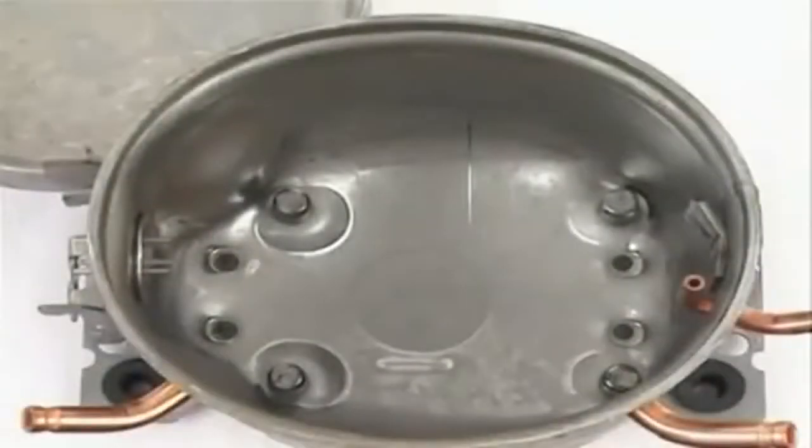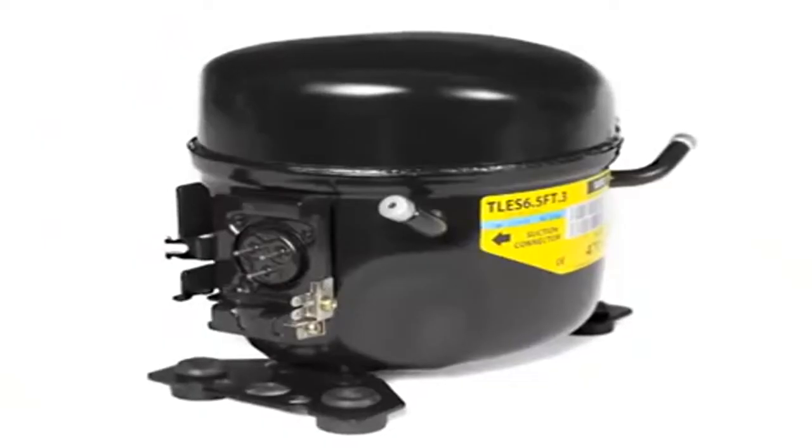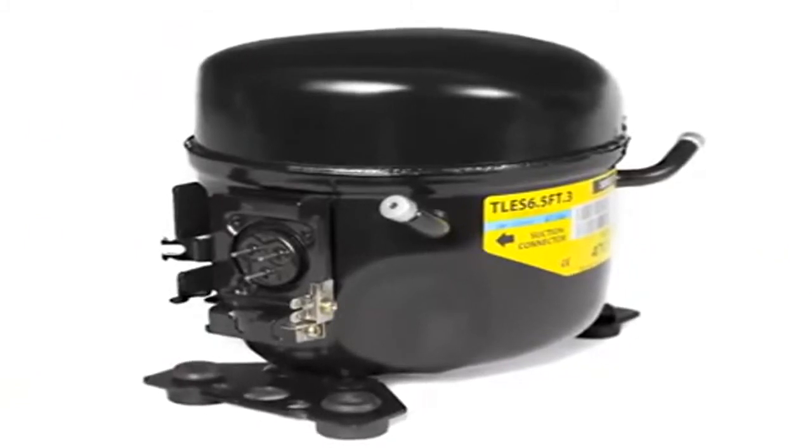Inside of the housing, four spring holders are installed at the bottom to center the compressor unit in the housing. On the outside, two base plates are attached for the assembly of the compressor in the appliance.